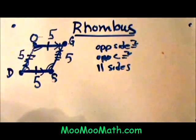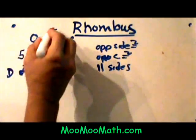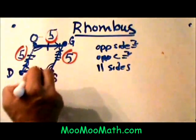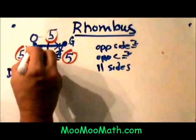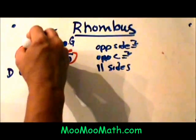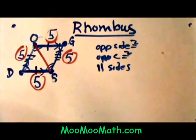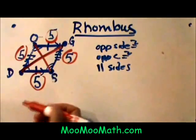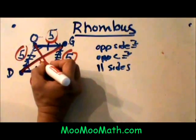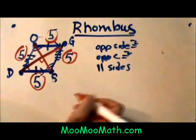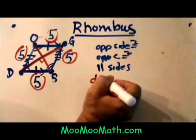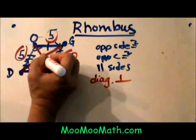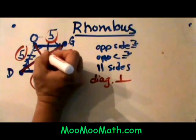Now, what sets the rhombus apart besides the four sides being congruent is it also has a couple of properties with the diagonals. I am going to draw diagonal OS and diagonal DG. One of the properties is the diagonals are actually perpendicular — they cross in the center and make four right angles.